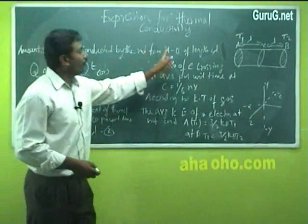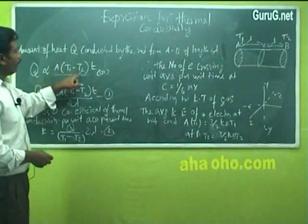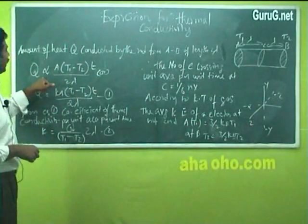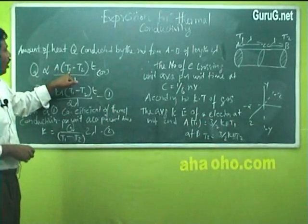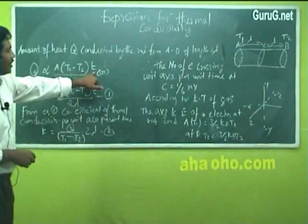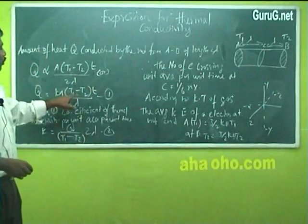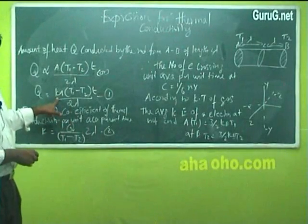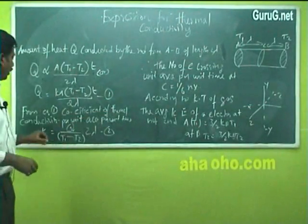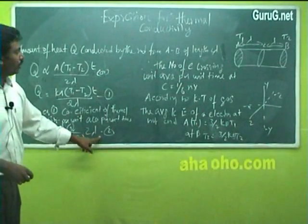The amount of heat conducted by the rod from A to B of length 2λ is given by Q, which is directly proportional to A into (T1 minus T2) into t divided by 2λ, where Q is the amount of heat conducted, A is the cross-sectional area, T1 is the hot temperature, T2 is the cold temperature, t is the time taken for conduction, and λ is the length of the rod. This can be written as Q = KA(T1 - T2)t / 2λ, where K is the coefficient of thermal conductivity. From equation 1, K = Q·2λ / [(T1 - T2)·t] — put this as equation 2.